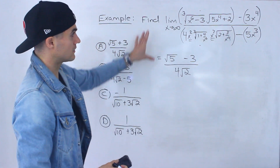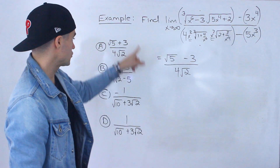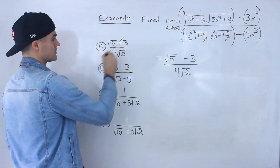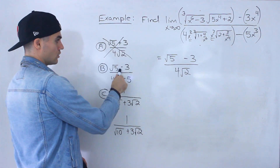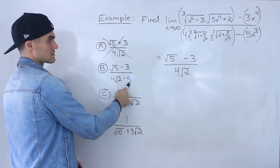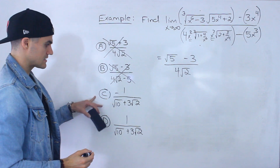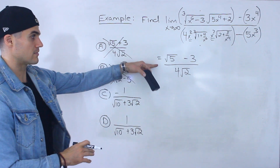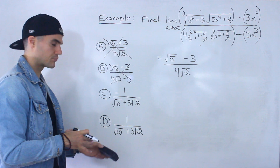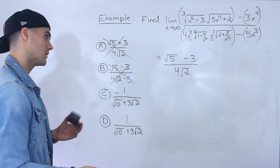So the limit as x approaches infinity of this crazy function equals root five minus three over four root two. Now which one of these answer choices is this equal to? Notice we've got root five minus three over four root two, so it's not this one. Close to this other one, but here we've got four root two minus five, so it's not that one either. And these remaining ones are in a different format than what we have here — but that's the extra trick I wanted to add in this question. You're probably not going to get something like this on your midterm, but I thought I'd throw it in anyway.